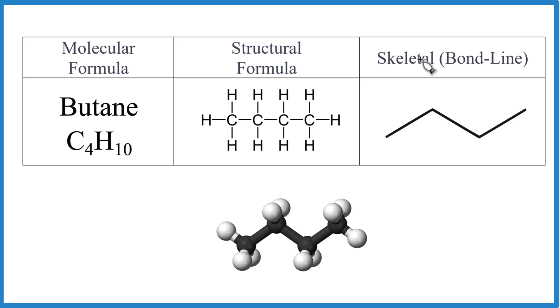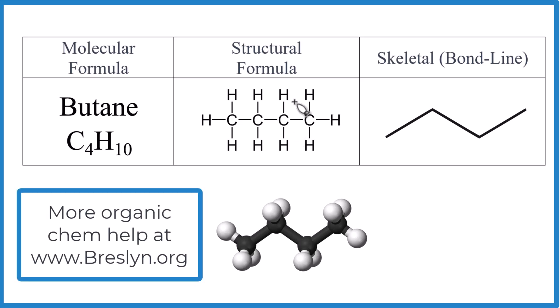Carbon will have four bonds. We can see right here, carbon: one, two, three, four. This carbon here: one, two, three, four. Carbon will form four bonds. Sometimes we'll have a double bond that counts for two, or a triple bond that counts for three. Carbon though, four bonds.